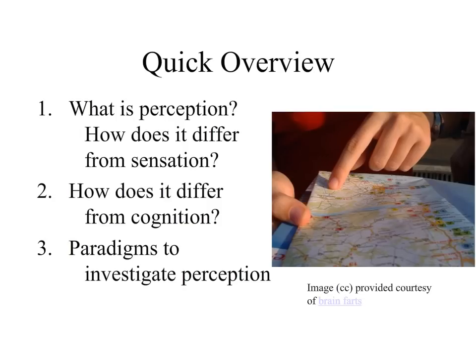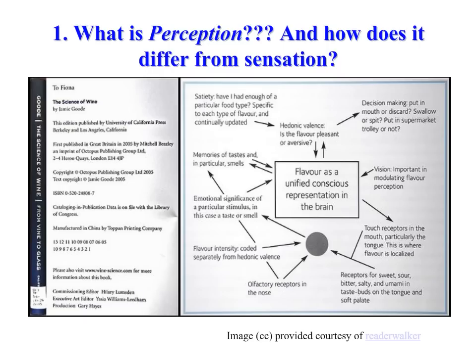Let's take a look at our roadmap for this module, Module 2.1. We're going to first begin by addressing the question: What is Perception, and how does it differ from sensation? We'll then move into the question of whether perception differs from cognition. Finally, we'll end with a brief introduction on paradigms to investigate perception, which we'll explore in more detail in Module 2.2.